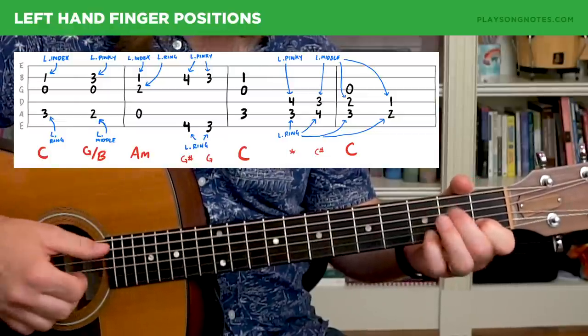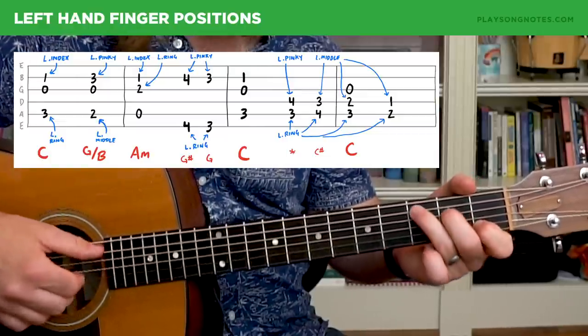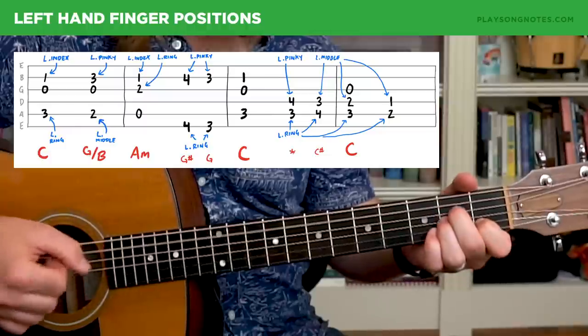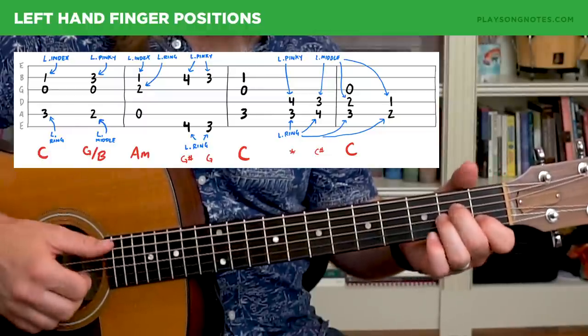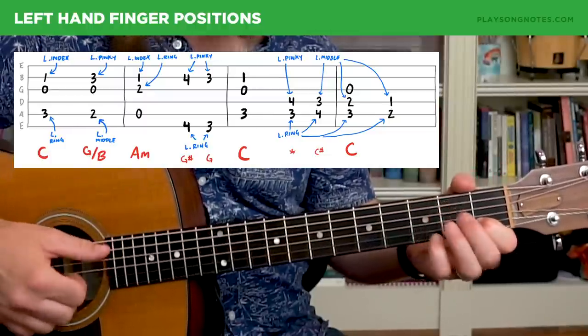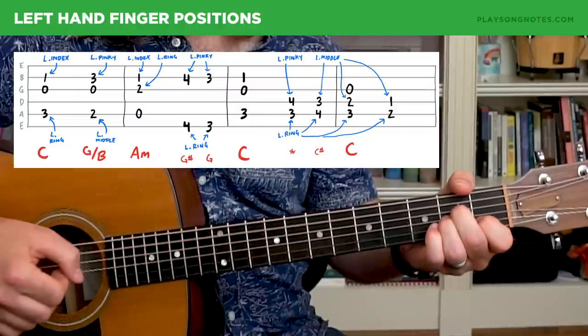But what I'll recommend is keep your index finger down the whole time you're doing this on the first fret of the second string. And the reason why is you're going to then go to an A minor. And this is a very fast moving part of the song. So practice doing that, from that C to the G over B to the A minor. And notice how your index finger is in the same spot the whole time. That's going to be important later on.